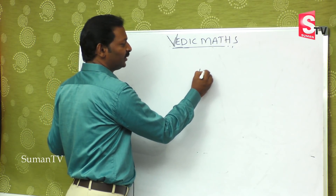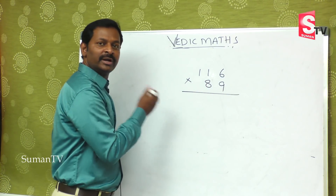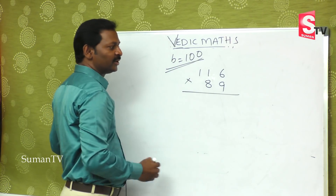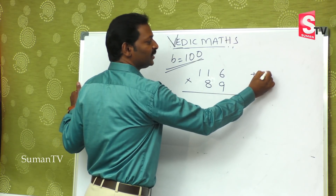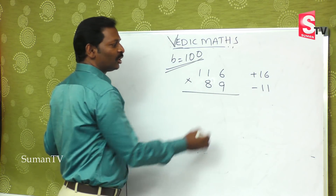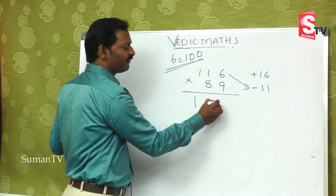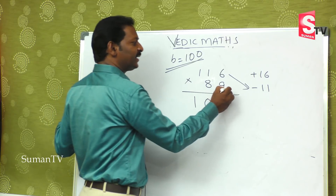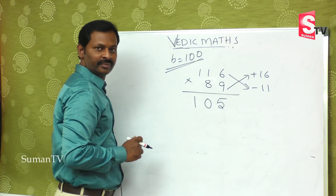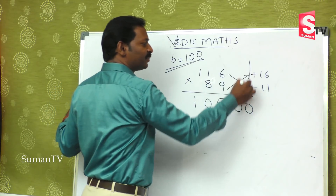Now with double digits: suppose 116 is multiplied by 89. Both numbers are close to 100, so the base is 100. 116 is above 100 by 16, so plus 16. 89 is below 100 by 11, so minus 11. Using our method, 116 minus 11 is 105, and 89 plus 16 is also 105. Since the base is 100 we put two zeros.